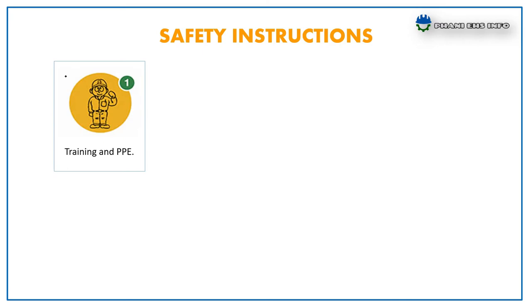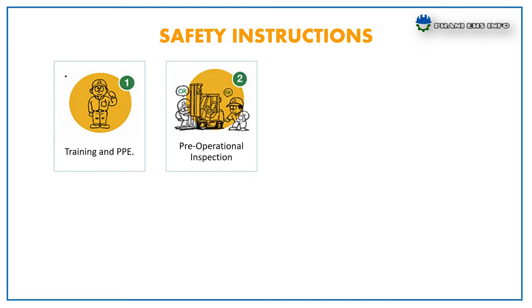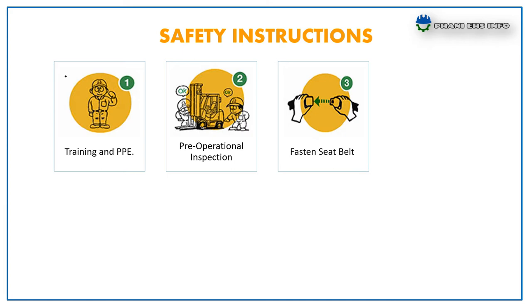Forklift safety tips: Training and PPE — only operators who have completed forklift operation training may operate the forklift. Wear the designated work clothes and protective equipment. Pre-operational inspection — inspect the forklift before starting work and inform the supervisor immediately if there are any problems. Fasten seat belt — fasten your seat belt before operating the forklift.